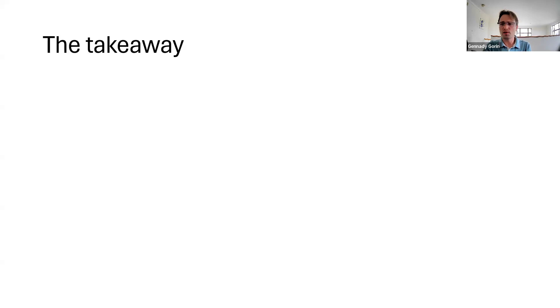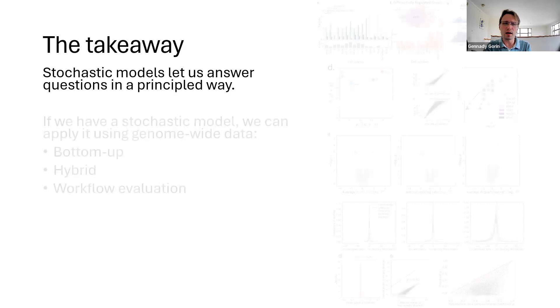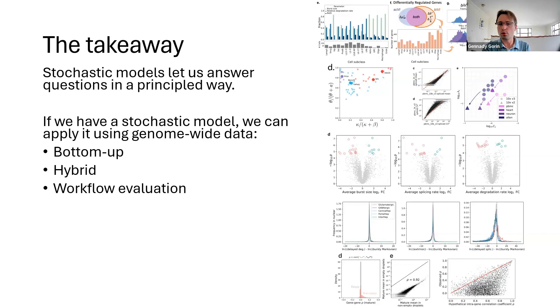So to summarize the broad themes of all of this, if we have a stochastic model, we can ask questions in a principled way and analyze genome-wide data and this could take a lot of different forms. You can see all the figures and variants of this on the right from various published papers. This could mean making a bottom-up model that starts from first principles and tries to describe biology but it could also mean making a hybrid model where we have a black box, some neural function and then we force it to meet the assumptions and axioms of physics in some way or it could mean doing workflow evaluation, building statistically founded simulations and criteria for good or bad performance of an existing heuristic workflow.